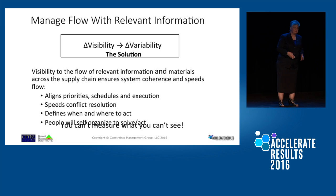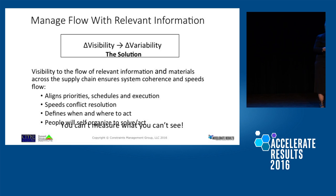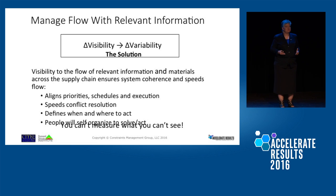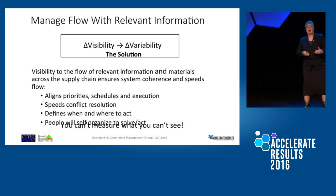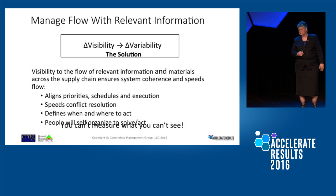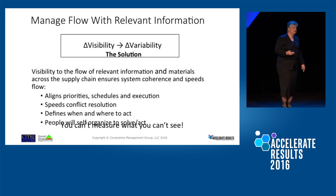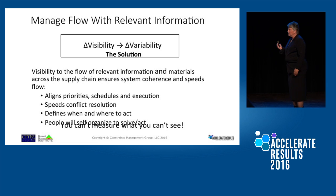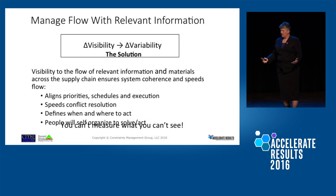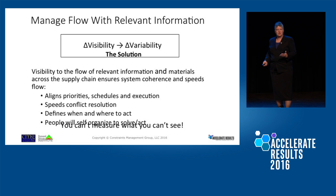What happens is that alignment speeds conflict resolution, because we're always going to come into conflicts — but how we get out of a conflict is by examining the assumptions holding us in that conflict, causing us to oscillate between two bimodal positions. We want to define when and where to act. When we give people relevant information, they will self-organize to solve problems and act — they don't need a hierarchy. We can have self-managed teams because they have the visibility.